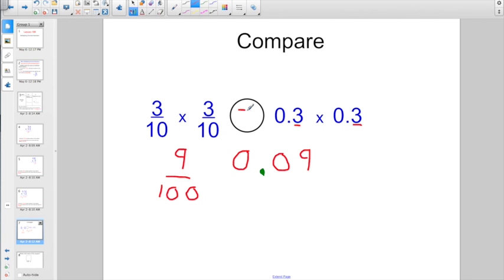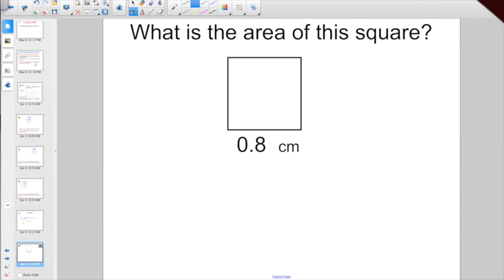So I have 9 over 100 compared to 0.09. This is why it's imperative you actually know how to say the name of the numbers correctly. This is also 9 hundredths. That's going to be equal. Hopefully you were able to look right at the beginning and say 3 tenths times 3 tenths compared to 3 tenths times 3 tenths. It would save you a whole lot of time.